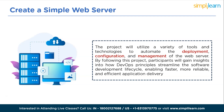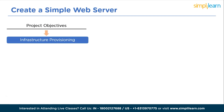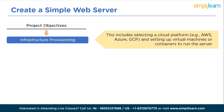By following this project, participants will gain insights into how DevOps principles streamline the software development lifecycle, enabling faster, more reliable, and efficient application delivery. Now for the project objectives — the first is infrastructure provisioning: provision the necessary infrastructure to host the web server, including selecting a cloud platform such as AWS, Azure, or GCP, and setting up virtual machines or containers to run the server.